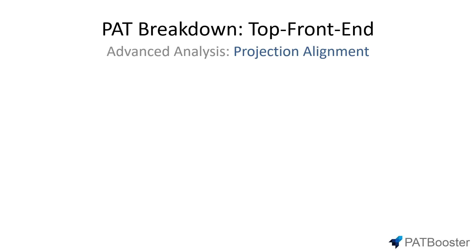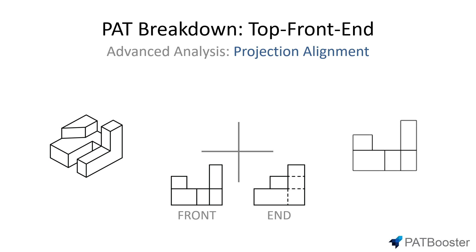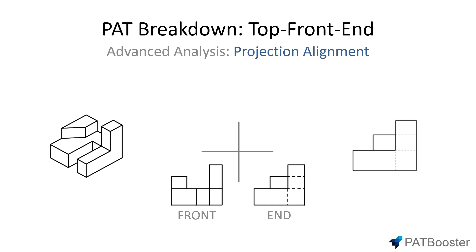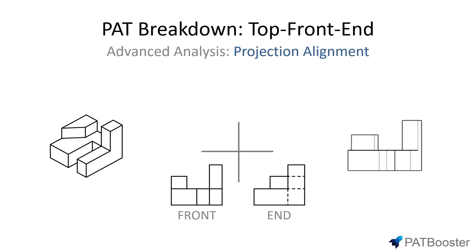The next point I like to call projection alignment. Projection alignment is simply a built-in feature of each top-front-end question that we can use to help match certain aspects of an object. Let's bring in the front and end projections and pretend that this is what we are given on a question. Keep in mind that on the PAT you'll only be given the two views — you don't have the luxury of the 3D representation I've included here, and obviously you won't have the animation either. Both are only here to help you understand the concepts.